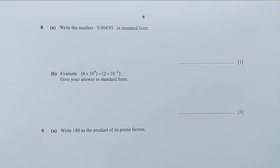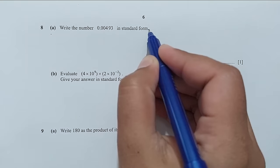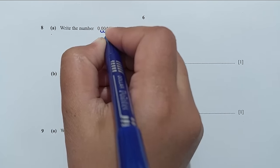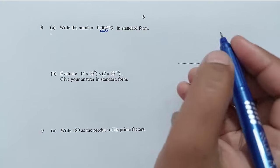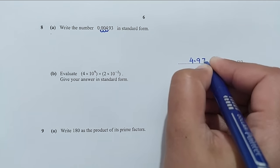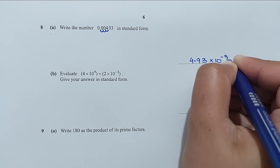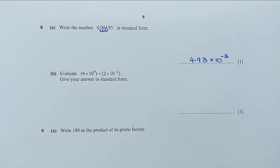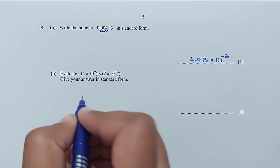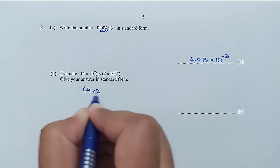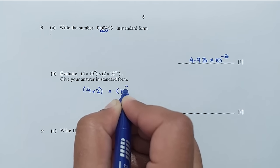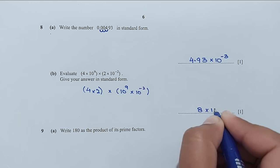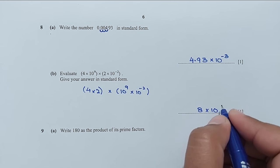Question number 8, part A: write the number in standard form. Moving the decimal point 3 units to the right gives 4.93 times 10 to the power negative 3, negative because we moved right. For part B: evaluate and give the answer in standard form. 4 times 2 is 8, and 10 to the power 9 times 10 to the power minus 2 gives 10 to the power 7. So the answer is 8 times 10 to the power 7.